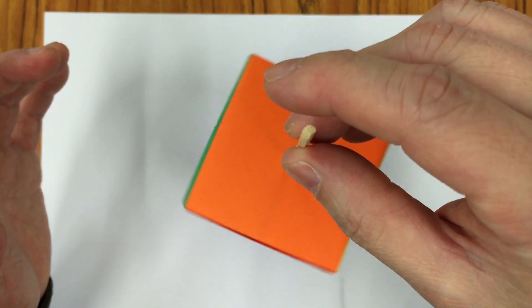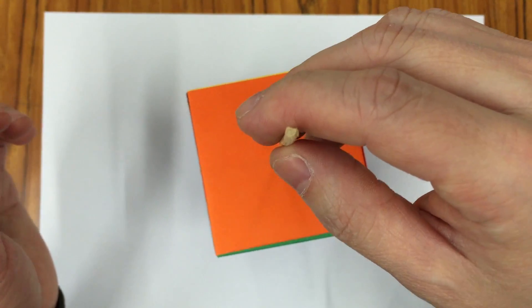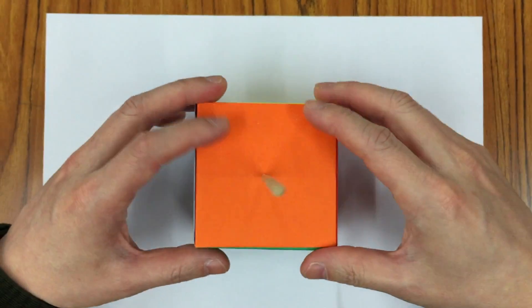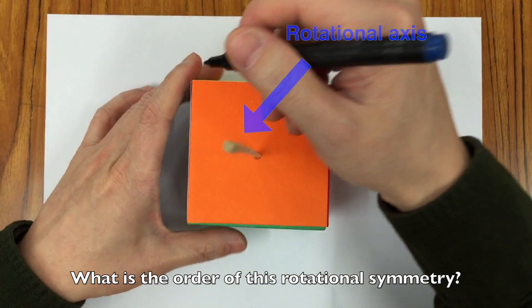Now if I rotate the cube, it will probably overlap with itself several times. Let's do the counting to see what is the order of this rotational symmetry.